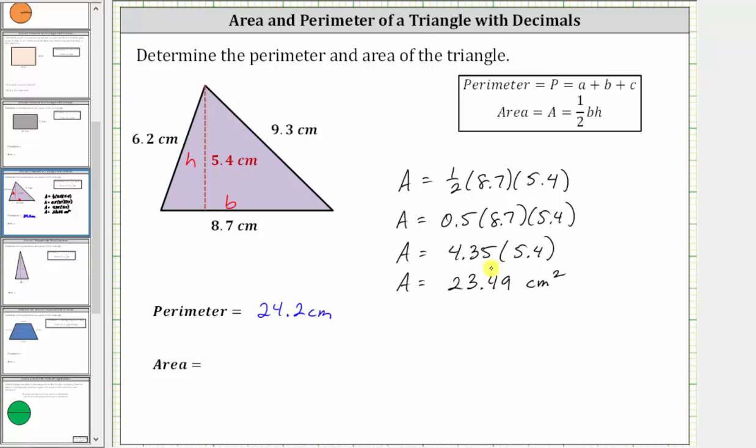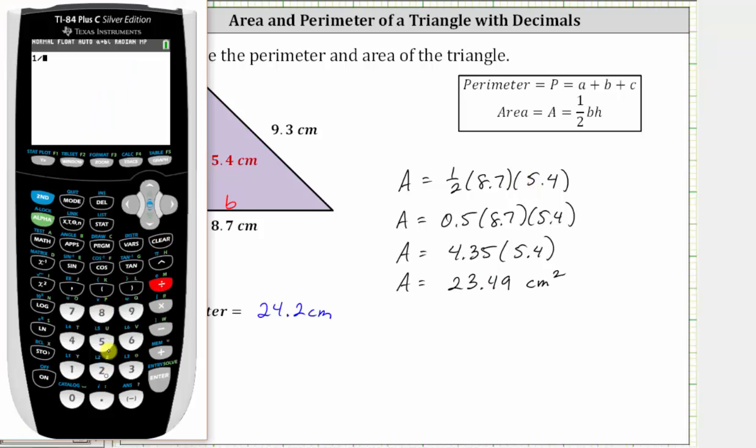Before we go though, let's check this product on the calculator. We have one divided by two times 8.7 times 5.4, which does verify we do have the correct area.